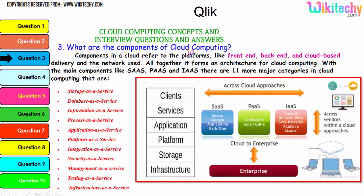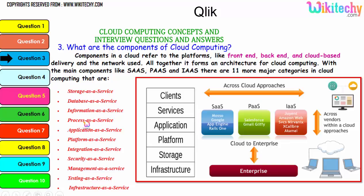Let's talk about the components of cloud computing. Components in a cloud refer to platforms like front-end, back-end, cloud-based delivery, and the network used. Together they form the architecture for cloud computing, with main components being Software as a Service, Platform as a Service, and Infrastructure as a Service. There are 11 major categories in cloud: storage as a service, database as a service, information as a service, process as a service, application platform, integration, security, management, testing, and finally infrastructure. These are additional services associated with the three major services that together form cloud computing.